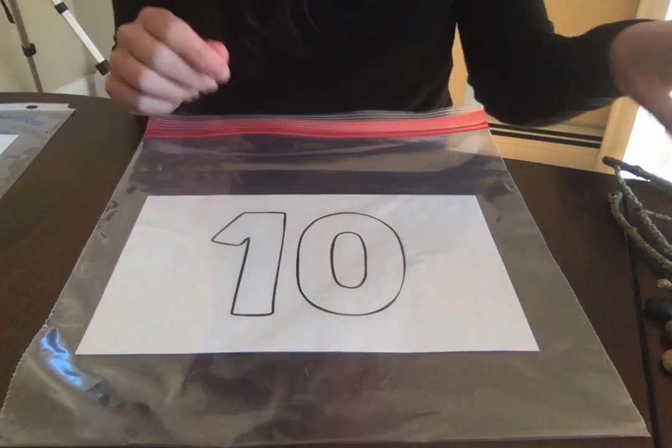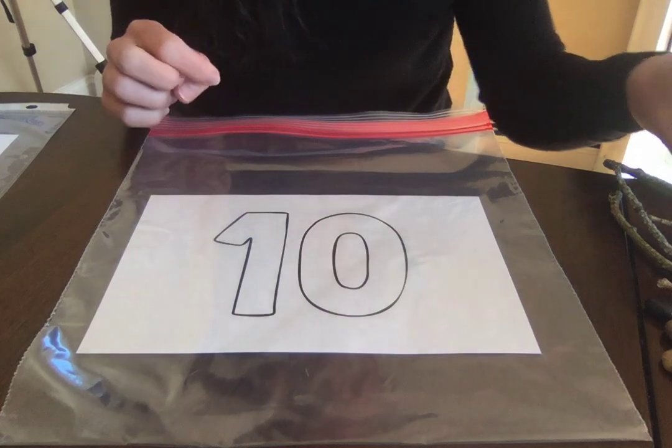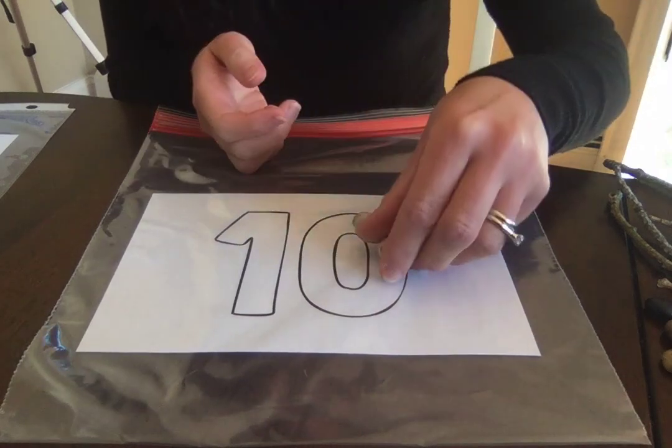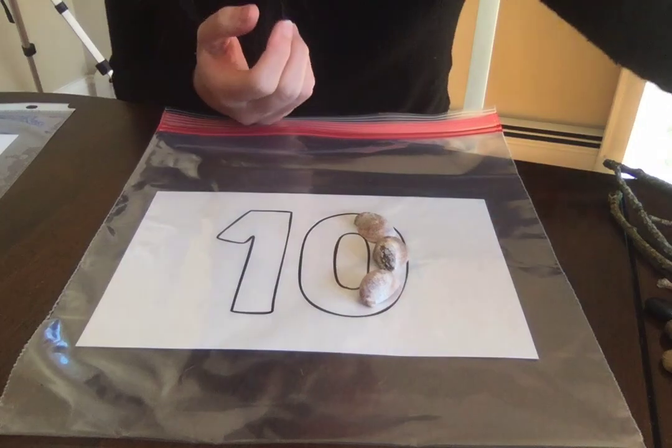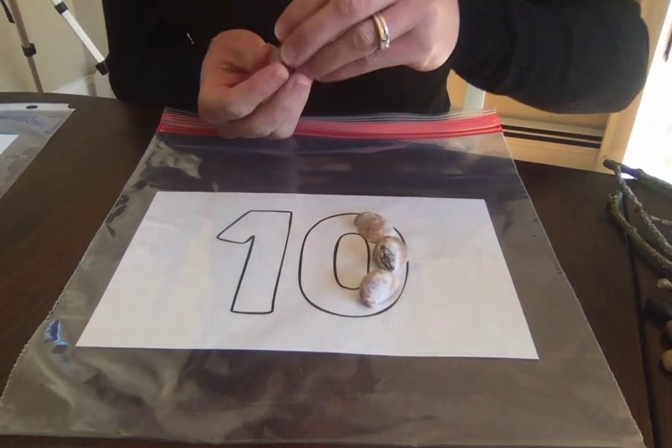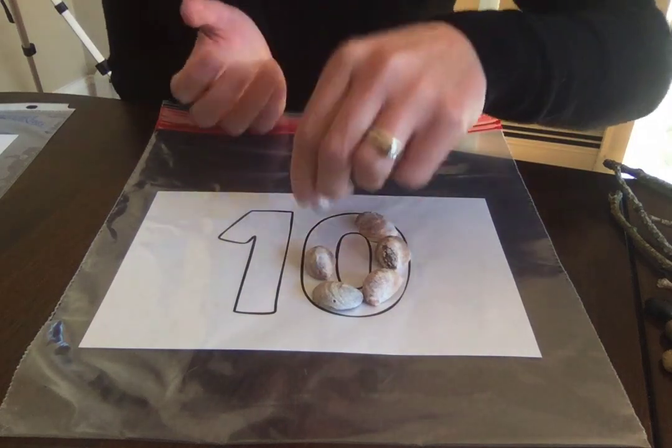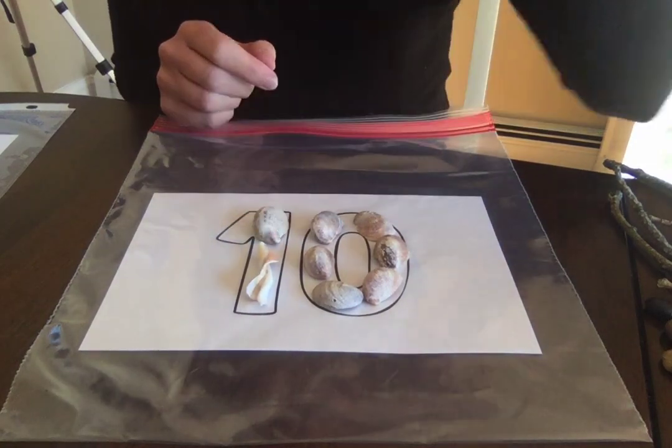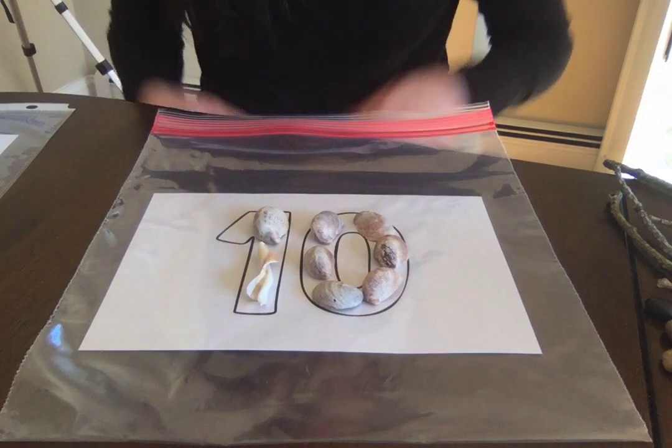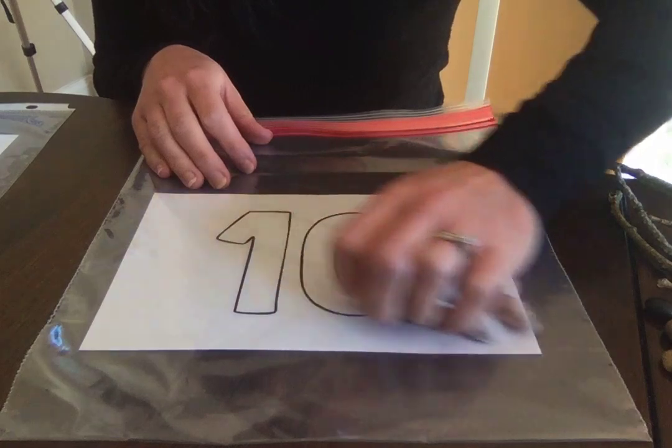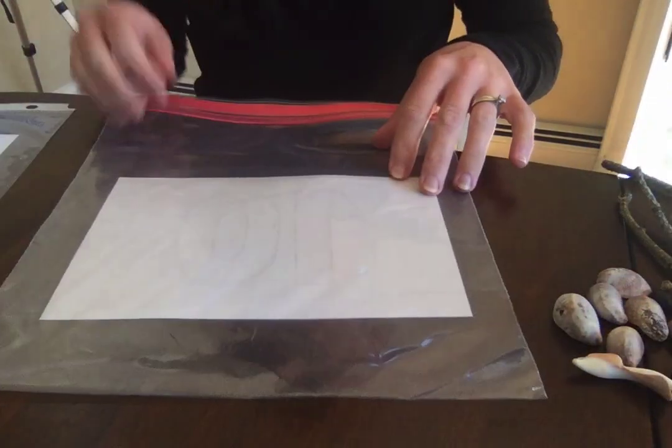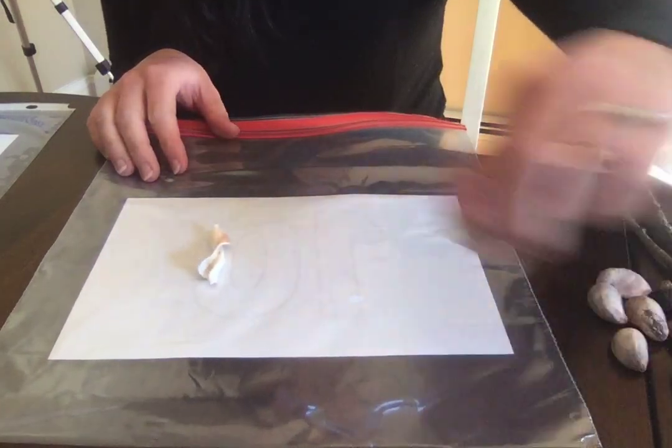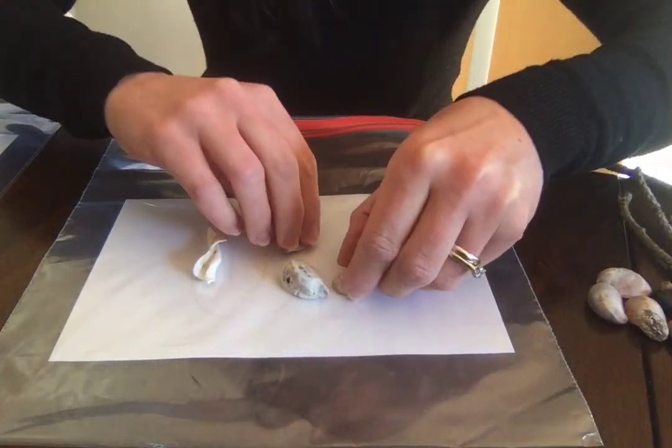And look, this is a number 10. So we can also trace or we can build a number 10 with sticks, with rocks. Or what about—I found shells in my playroom and I decided to use these shells that we've collected so I can follow along building the zero. Look at this cool shell and building the number one. You can use anything you want. Anything that you have in your house you can use to make these numbers or these letters. And you can do them even if you don't have a printout of a number or a letter. You can practice number 10 by making a one and a zero.